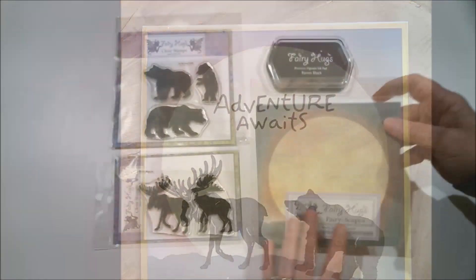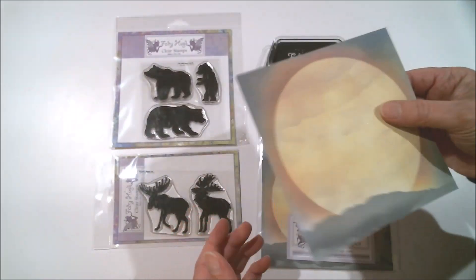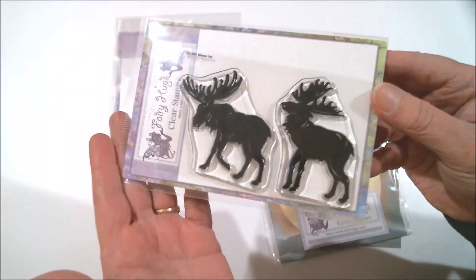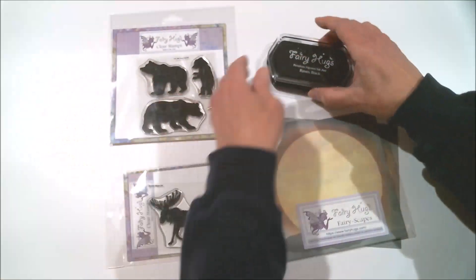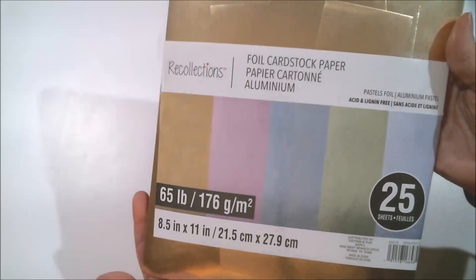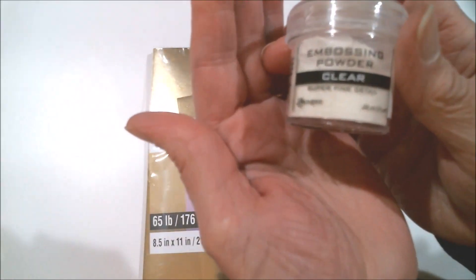And now I'm using that Fairy Scapes Full Moon background that I mentioned earlier and I just love this because it's printed on really sturdy heavyweight cardstock. I'm also going to be using the Moose stamp set and the Bear Family stamp set, and of course the Fairy Hugs ink. I will also be using this Recollections foil cardstock from Michael's and Ranger Clear Embossing Powder.